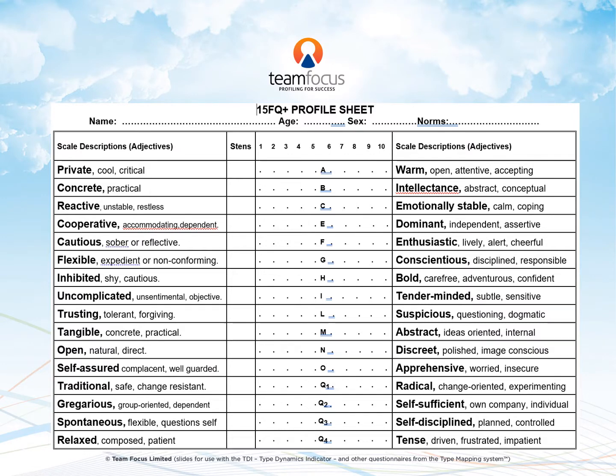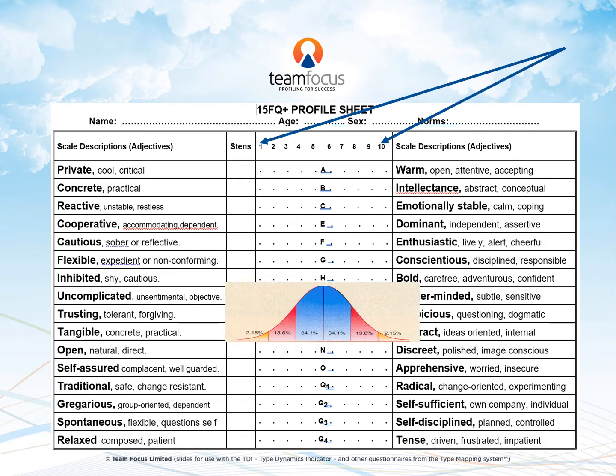Here is a typical profile sheet where the scores are on a scale of 1 to 10. The 1 to 10 scale represents the normal distribution like this. This shows us that the majority of people — in fact 68% of them — score between 4 and 7. Hence scores 1, 2 and 3, or 8, 9 and 10 are quite rare, equivalent to our very tall or very short people.